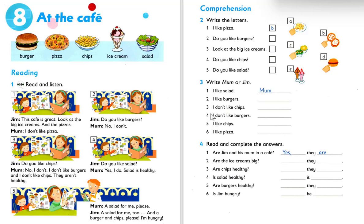Number three: I don't like chips. Who doesn't like chips? The person who doesn't like chips is mom, so the answer is mom. Number four: I don't like burgers. Who doesn't like burgers? Looking at the conversation, mom says she doesn't like burgers — answer is mom. Number five: I like chips. Who likes chips? Jim. Also, I like pizza — Jim.